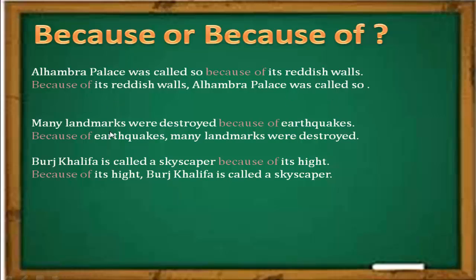More examples: 'Many landmarks were destroyed because of earthquakes' — no verb after 'because of,' just a noun phrase. 'Burj Khalifa is called a skyscraper because of its height' — again a noun phrase follows. Or: 'Because of its height, Burj Khalifa is called a skyscraper.' This point was not mentioned in your book, but it is important to understand.